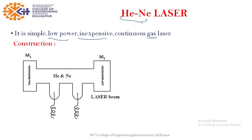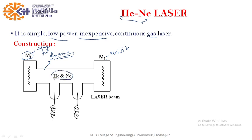Now we shall discuss the construction of Helium-Neon laser. It consists of a discharge tube made up of quartz. On the two sides we have mirror M1, which is fully silvered, and M2, which is a semi-silvered mirror. This discharge tube is filled with a mixture of Helium and Neon in the ratio 10:1, meaning the partial pressure of Helium is 10 times that of Neon.